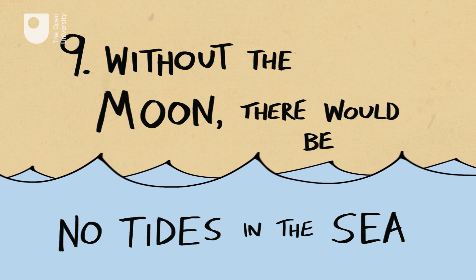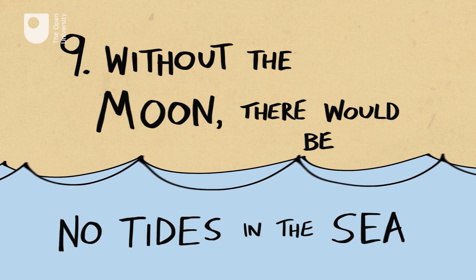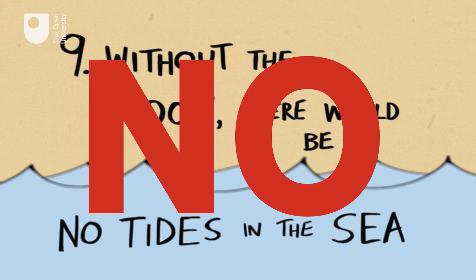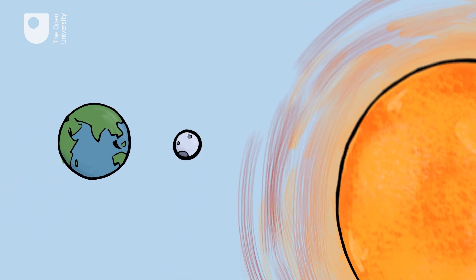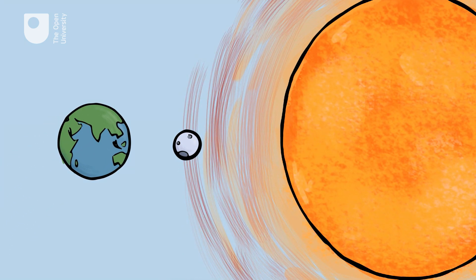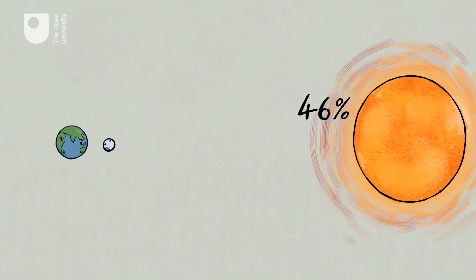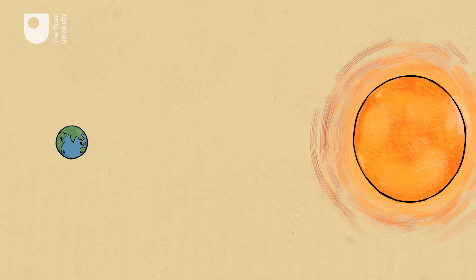9. Without the Moon there would be no tides in the sea. The Sun also exerts a tidal force on the Earth's oceans. The Sun contains much more mass than the Moon, but it is also much further away, so that the Sun's tidal force is about 46% of the Moon's tidal force. Without the Moon the Earth's oceans would experience twice daily tides, a bit less than one half the size of the actual tides.